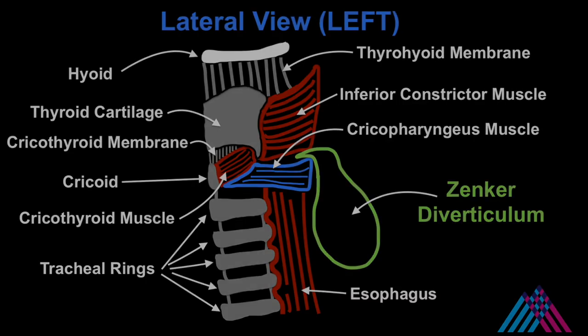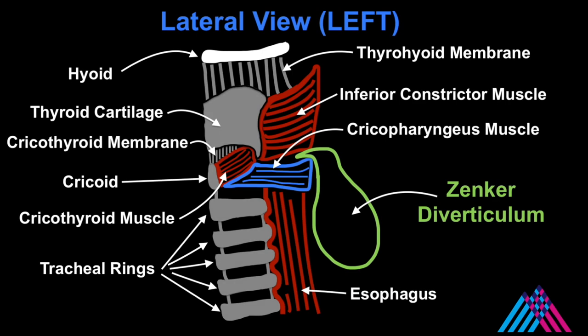This is a left lateral view of the upper aero digestive tract. A Zenker diverticulum is an outpouching of the mucosa and submucosal layers through a space between the cricopharyngeus and inferior constrictor muscles known as Killian's triangle. It is classically found in elderly adults and may present with halitosis, regurgitation, and dysphagia from food particles trapped in the diverticulum.